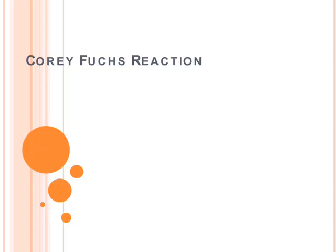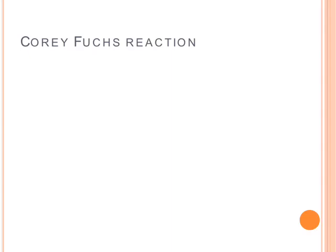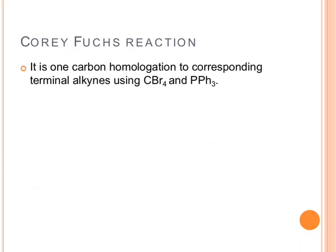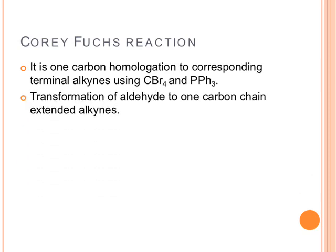Hello everyone. Today I am going to explain a very important reaction: the Corey-Fuchs reaction. In this I will be talking about general introduction, mechanism, and examples. This reaction was developed in the year 1972 by E.J. Corey and P.L. Fuchs. Basically, it is a one-carbon homologation to corresponding terminal alkynes using carbon tetrabromide and triphenylphosphine. The starting material is an aldehyde, so it is a transformation of an aldehyde to a one-carbon chain extended alkyne.